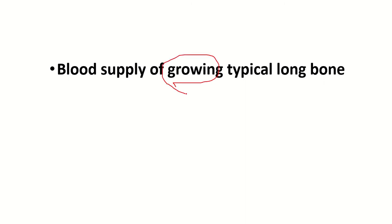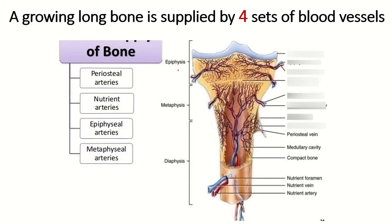The growing typical long bone has the following parts: the epiphysis, which is a bony part; the epiphyseal cartilage, which is hyaline cartilage; and the diaphysis. The part of the diaphysis near the epiphyseal cartilage is known as the metaphysis. All parts are bony except the epiphyseal cartilage, which is formed by hyaline cartilage.